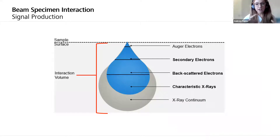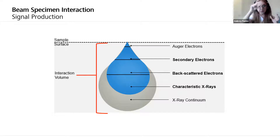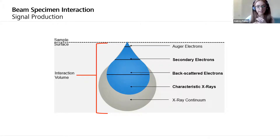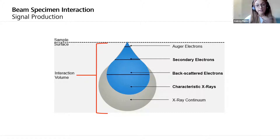As that beam electron interacts with the specimen, different signals are produced. In order to visualize the specimen in the SEM, you're going to choose one of these signals with your detector, and that will change the way that image looks on screen. The various signals that are collected include visible light, heat, x-rays, and different types of electrons like Auger electrons, secondary electrons, and backscattered electrons. We're going to focus on secondary electrons and backscattered electrons, as these are primarily used to create that visible image.